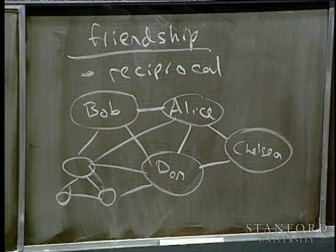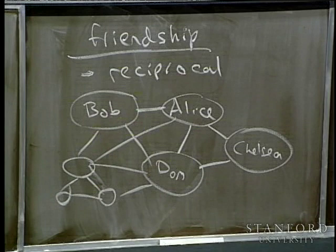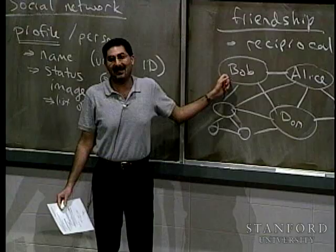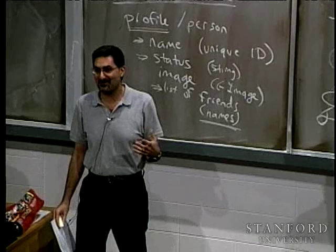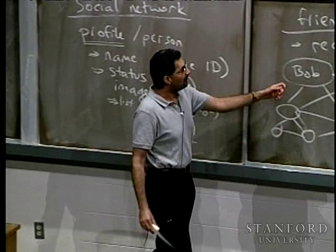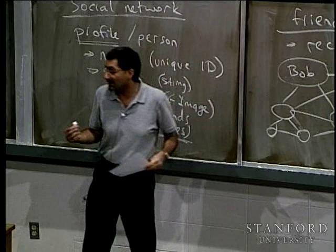What you actually end up drawing is something we refer to as a network — and if you're the mathematical type, this is really a graph, specifically an undirected graph. Take CS103b if that gets you excited. What's important is that this is where the social network name actually comes from: we create this network that keeps track of social relations. So if we have that basic idea, how do we actually think about writing an application to keep track of them?